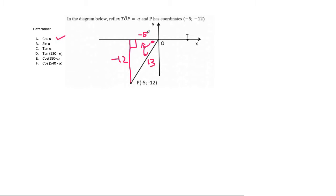Sin alpha is going to be the opposite over the hypotenuse, which is negative 12 over 13. Okay, so that's going to be for sin alpha.